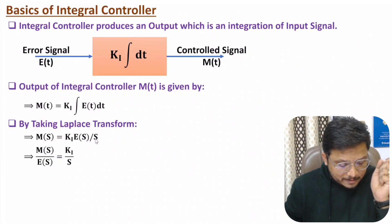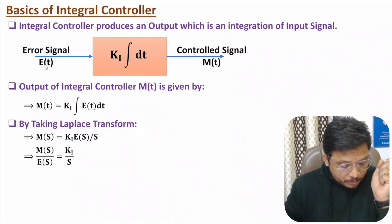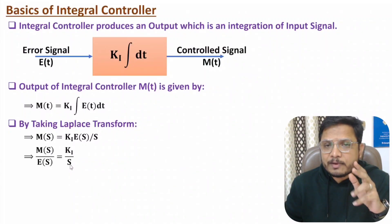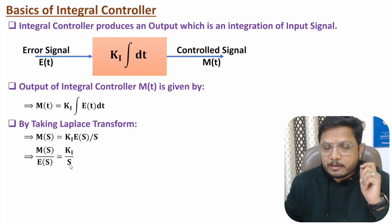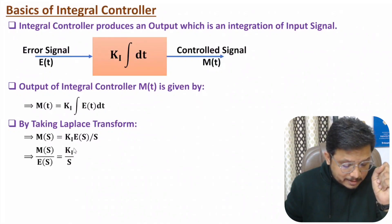The gain of the integral controller in the frequency domain is m(s) divided by e(s), which equals Ki divided by s. One should know that with an integral controller, the gain is Ki/s, where Ki is a constant and 1/s represents the integration of the input signal.